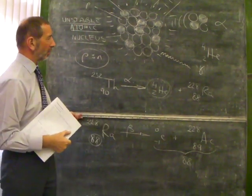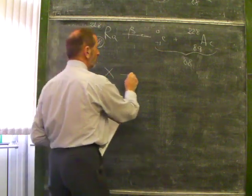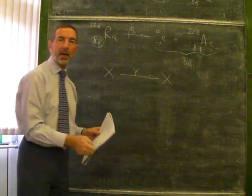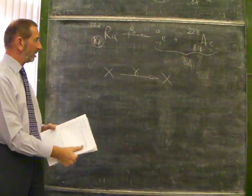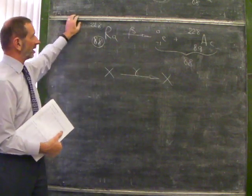But if an atom X was to lose gamma radiation, it wouldn't become a different particle. There would be no change. So you're not likely to ever have to write an equation here because there is no change.